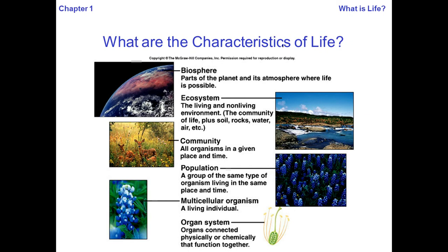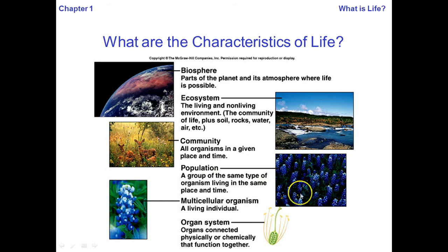Living things are also organized beyond just one individual. For example, part of a flower — this organ system is physically and chemically connected to function together. That flower becomes part of the whole plant: flower, roots, stems, and leaves — that's a multicellular organism, one living individual. Combine a bunch of the same living individuals in the same area and that's called a population. Take that population and combine it with all other living things in that area and you've got a community. Add the non-living things — soil, rocks, water, air — and you've got an ecosystem. Combine all ecosystems together and you get the biosphere, which is basically our entire planet where life is possible.